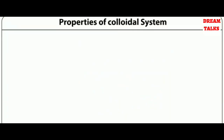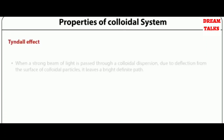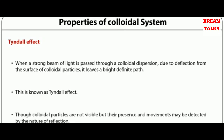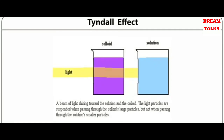The first property of colloidal systems is the Tyndall effect. When a strong beam of light is passed through a colloidal dispersion, due to deflection from the surface of colloidal particles, it leaves a bright definite path. Though colloidal particles are not visible, their presence and movements may be detected by the nature of reflection. On the screen, there are two beakers — one with a true solution and one with a colloidal dispersion. When a beam of light passes through both, the pathway is easily identified in the colloidal dispersion but is not visible in the true solution.